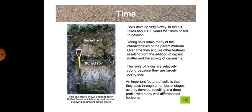Now we will discuss about time. Soils develop very slowly. In India, it takes about 400 years for 10 mm of soil to develop. Young soils retain many of the characteristics of the parent material. Over time, they acquire other features resulting from the addition of organic matter and the activity of organisms. The soils of India are relatively young because they are largely post-glacial. An important feature of soils is that they pass through a number of stages as they develop, resulting in a deep profile with many well-differentiated horizons. This soil profile shows a recent soil in a forest which has formed on sand overlying an ancient buried profile.